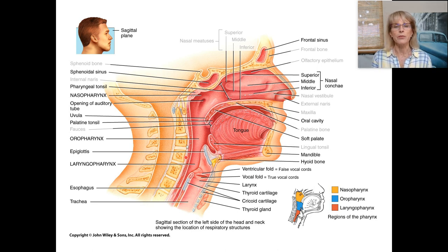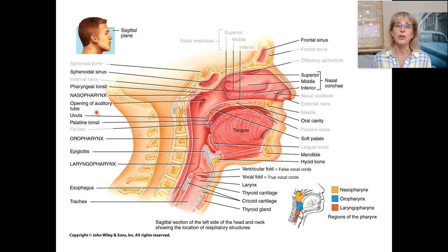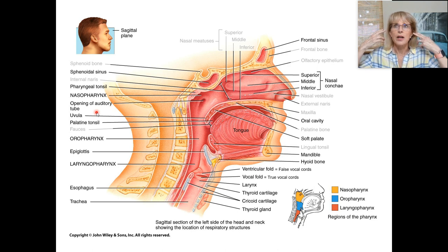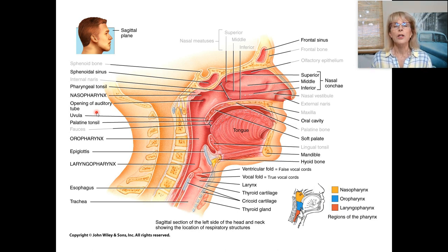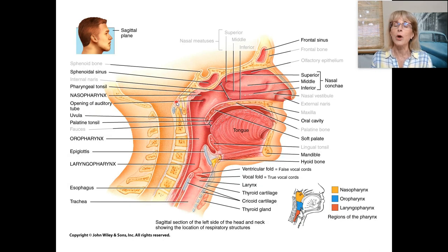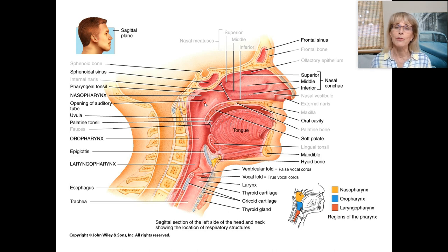The pharynx has an opening that connects to the auditory tube, also known as the eustachian tube. When we discussed the anatomy of the ear, I explained that the middle ear — where the ossicles are — is filled with air and some fluid, and that the extra air drains out of the middle ear to the back of your throat or back of your nose through that opening. Going up there, you would find the three ossicles of your middle ear.